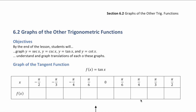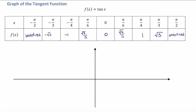Let's begin with tangent. Please fill in the values on this table. Let's look at the graph of tangent x now. Begin by labeling your vertical and horizontal axes. Now that our axes are completely labeled, let's go ahead and plot a few things.